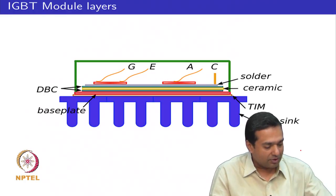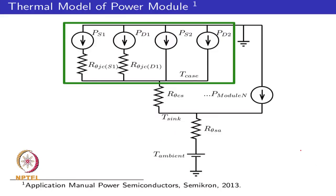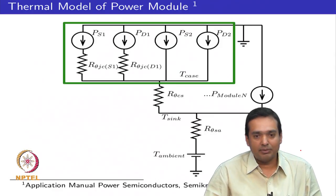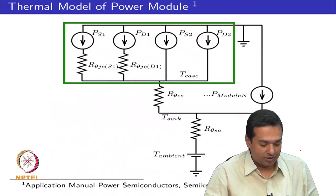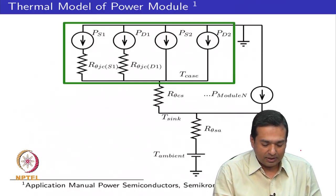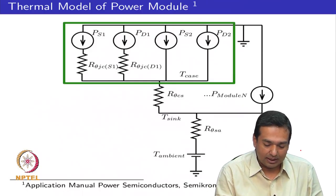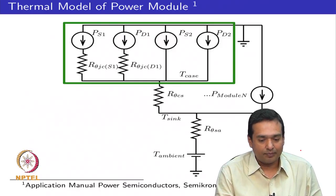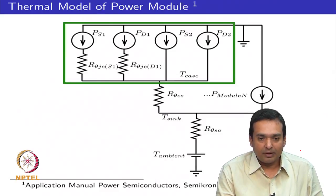Different parts of the module operate at different temperatures: the junction temperature, the top surface temperature of the chip, the bottom surface temperature, and the case temperature are all different values. There are thermal gradients within the power module, and because of this variety of reasons, stress builds up within the power module during operation.